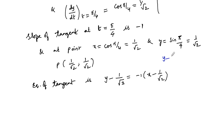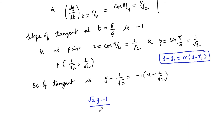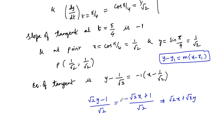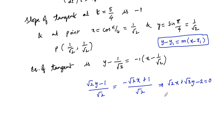Taking LCM, root 2 y minus 1 equals minus root 2 x plus 1, which gives root 2 x plus root 2 y minus 2 equals 0. This can also be written as x plus y minus root 2 equals 0, since root 2 cancels when dividing through.